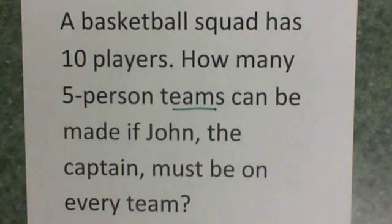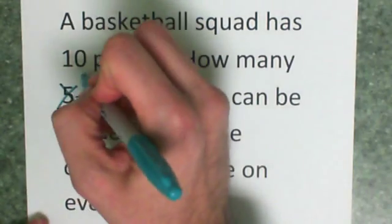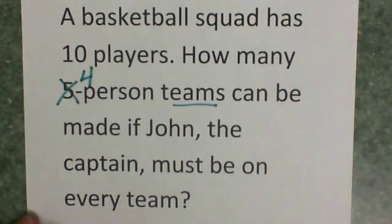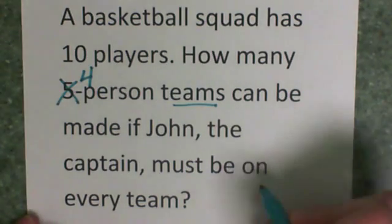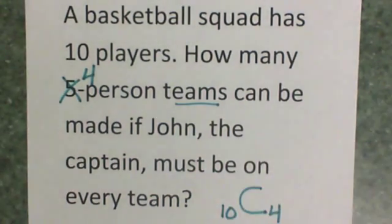But the only catch here is that John has to be on every team. So I automatically know John is one of the members. So for my purposes, I'm going to drop this down to figuring out who the other four are. And it's a bit chaotic. Once you pick the four, it doesn't matter who was first. It doesn't matter who was fourth and so on. So that is a combination.